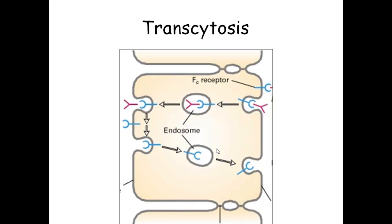Transcytosis is just combining endocytosis on one side and exocytosis on the other, from one cell — like the little M cell, which endocytosed or pinocytosed it on one side and then exocytosed it on the other. Many of your cells do this — your intestinal cells, the tubules in your kidneys, put stuff across by transcytosis. And that's how to get in and out of a cell.